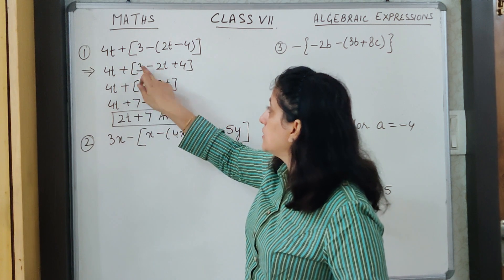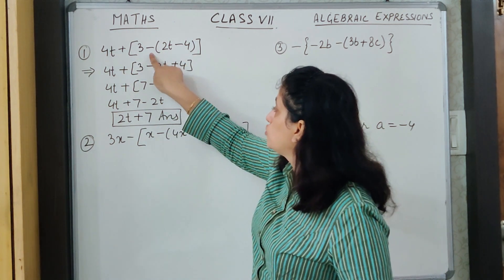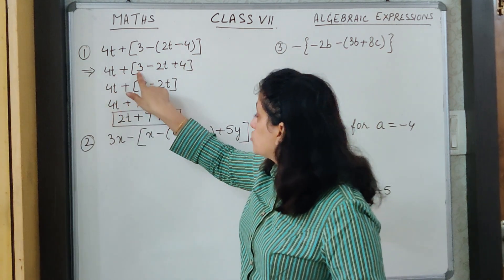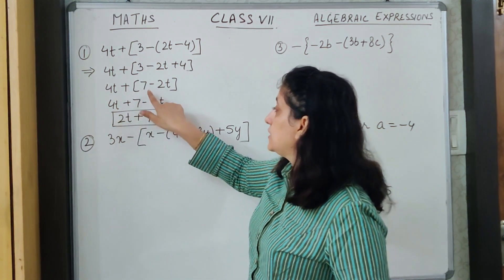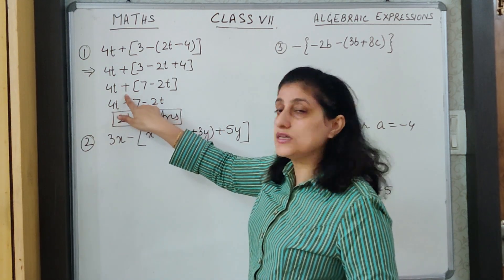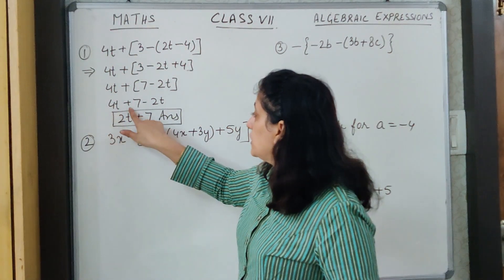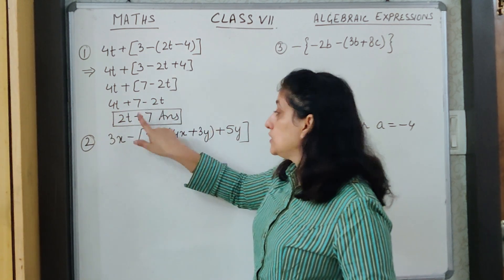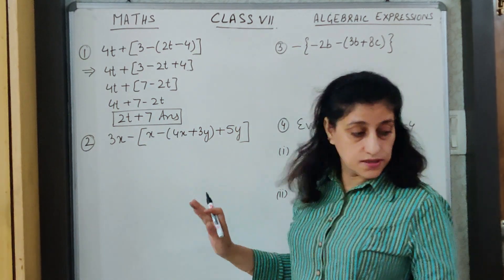So 4t plus 3. Now the minus sign will change the inside signs — I get minus 2t, and minus minus gives plus 4. Solving 3 plus 4 makes 7. I get 4t plus, inside the bracket, 7 minus 2t. Now I open this bracket because there is a plus sign outside — both inside signs remain the same. I get 4t plus 7 minus 2t, which gives 2t plus 7 as the answer.